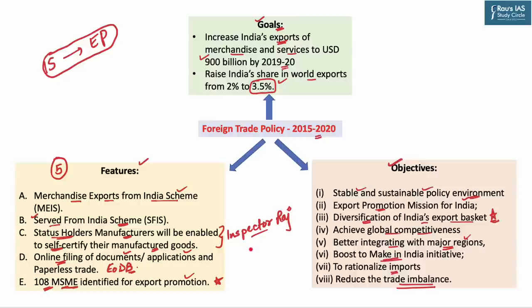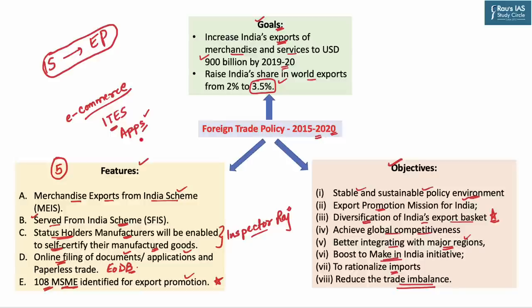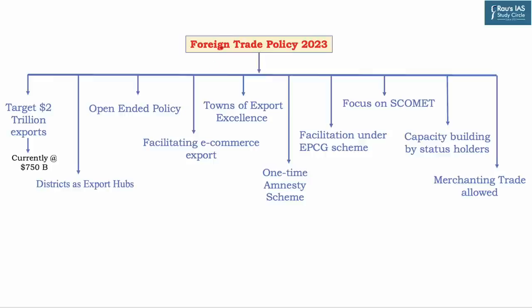Why do we need a new policy? The 2015 policy ended in 2020, and from 2015 till now the dimensions have changed drastically. There is e-commerce, which is now ruling the export sector. There are IT-enabled services and application-based services — for example, what if Zomato wants to export its services, or Swiggy wants to export food items to Nepal or Bangladesh? Are these items covered in the old foreign trade policy? What is the government doing for promotion of these kinds of services? Hence, the government required the replacement of the previous policy with a new one.